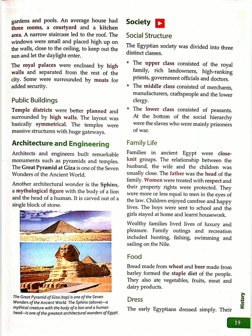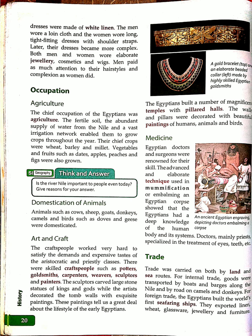Their recreational activities included hunting, fishing, swimming, and sailing on the Nile. Bread and beer were their staple diets, and they also used to eat vegetables, fruit, meat, and dairy products.